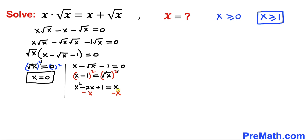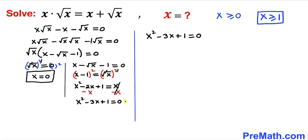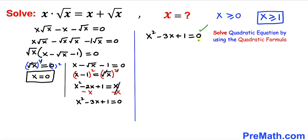Now let's subtract x from both sides. On the right hand side x and negative x cancel, leaving 0. The left hand side becomes x squared minus 3x plus 1 equals 0. Since we are running out of space, I'll copy this equation over — this is our quadratic equation, and we are going to solve it using the quadratic formula.